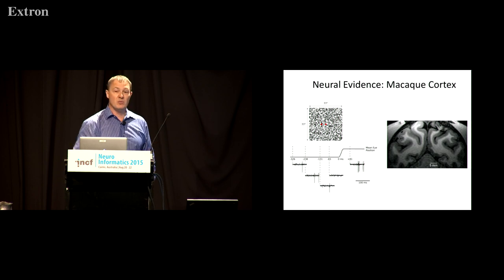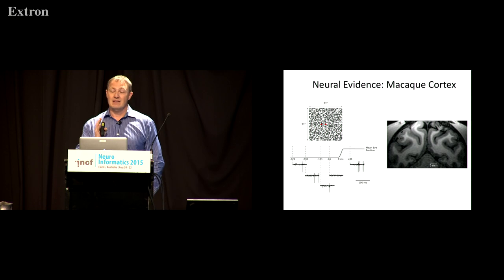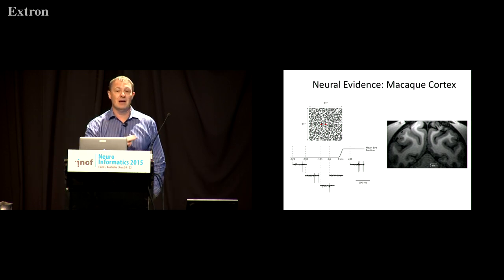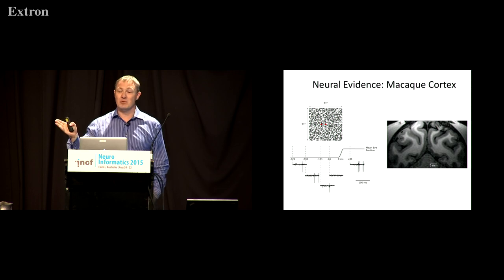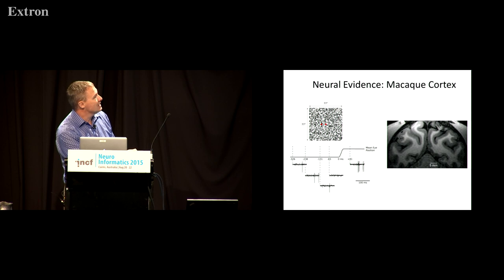We then remove that fixation spot and put another fixation spot some degrees away. The monkeys are required to attend to that target, predict where it is, and make a movement to it — creating a saccade. This is eye position here, and you can see they've made a saccade, then fixation at the new location.